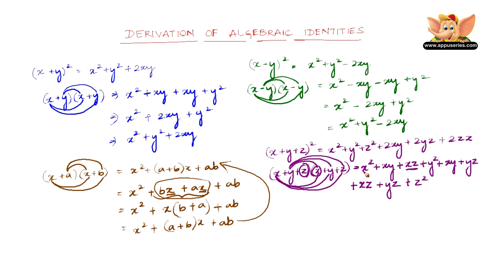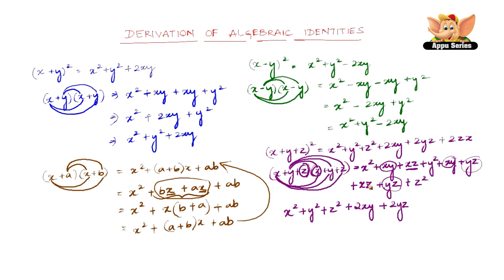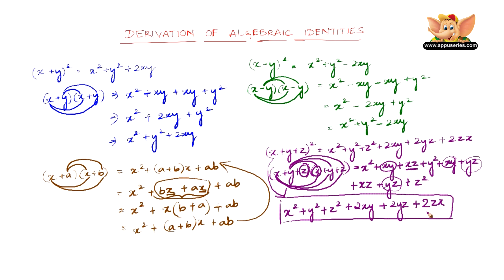Now all we have to do is group these terms. First the squares: x square plus y square plus z square. Then we have two xy terms, so plus 2xy. Next we have two yz terms, so plus 2yz. And two xz terms, so plus 2xz, which we can also write as 2zx to make it look cyclic. So x plus y plus z the whole square equals x square plus y square plus z square plus 2xy plus 2yz plus 2zx.